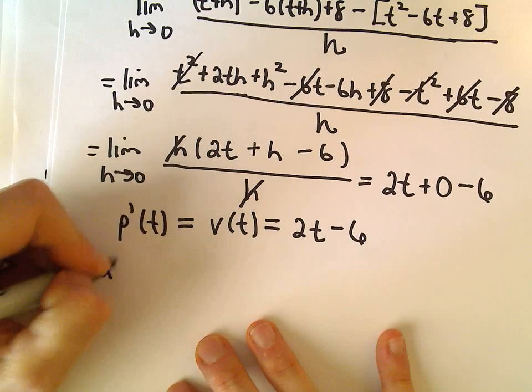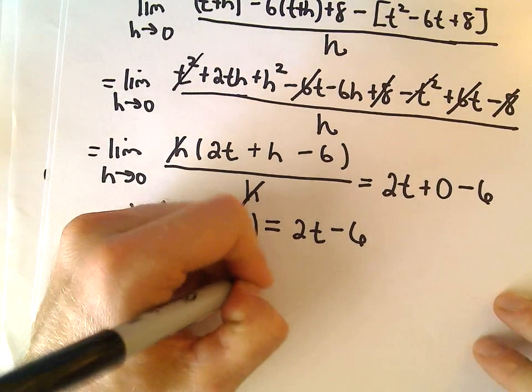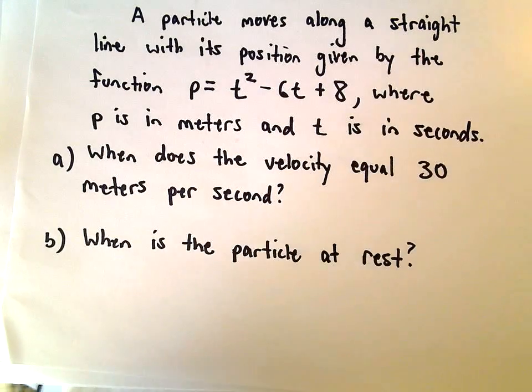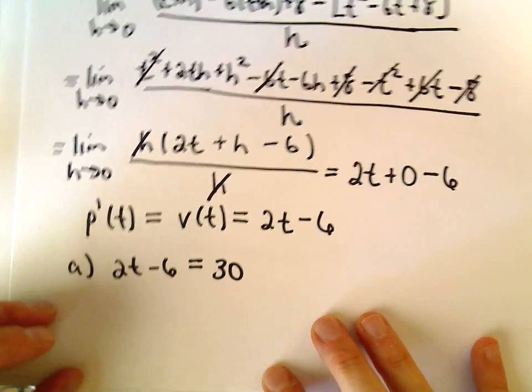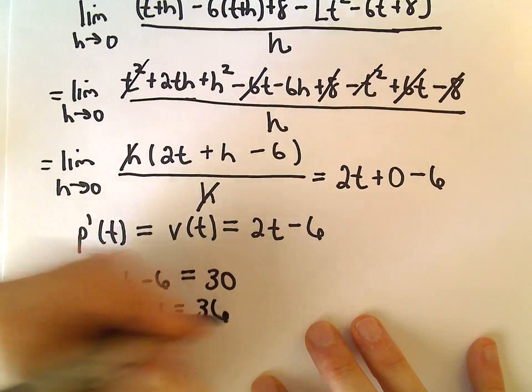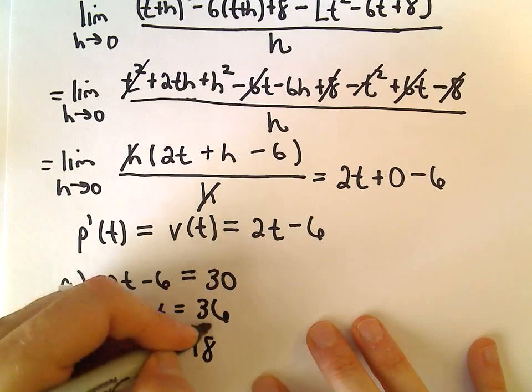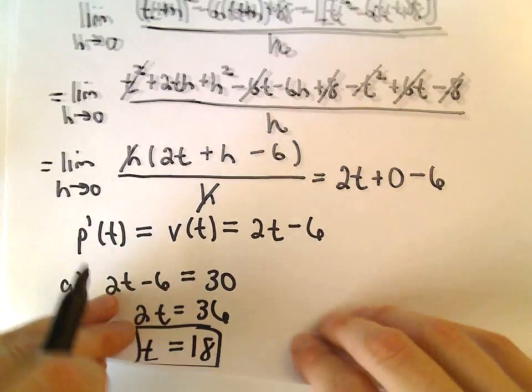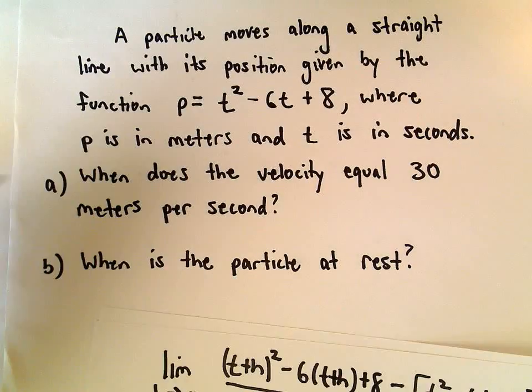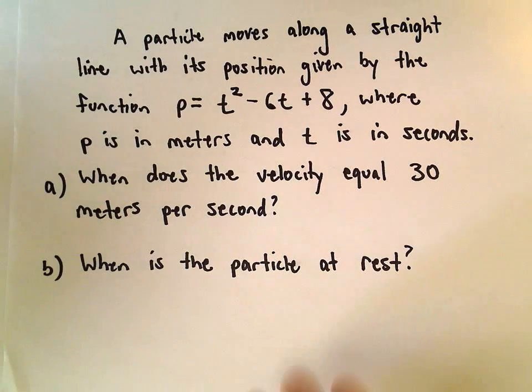So part a, we'll just take our velocity function and set that equal to 30. And now, all we have to do is just solve for t, so we can add 6 to both sides. That'll give us 2t equals 36, and then we can divide both sides by 2, and we'll get t equals 18. So after 18 seconds, that's when the particle will be traveling at a rate of 30 meters per second.